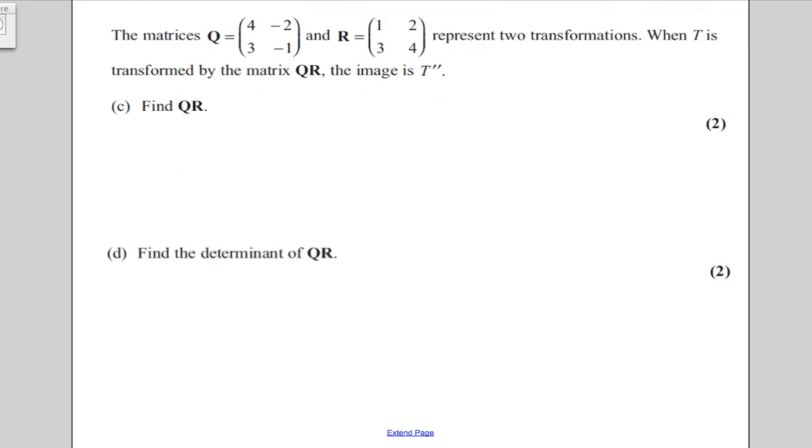Okay, then we are given matrices Q and R, and they represent two transformations. So, when T, the original triangle, is transformed by matrix QR, the image is T double prime. Find QR.